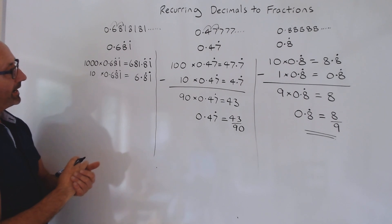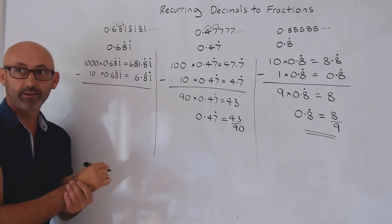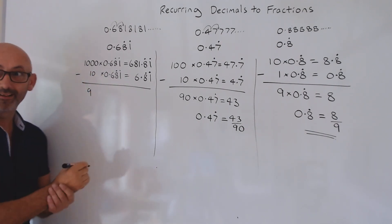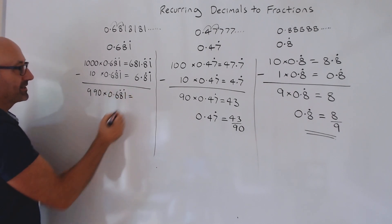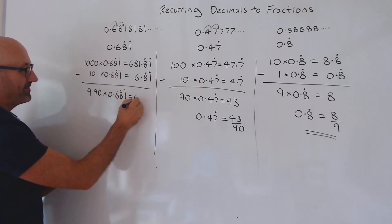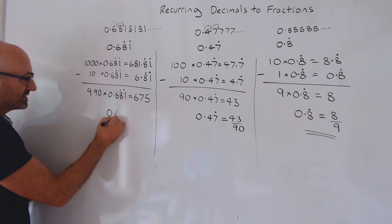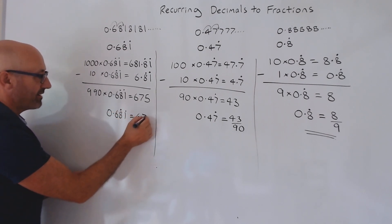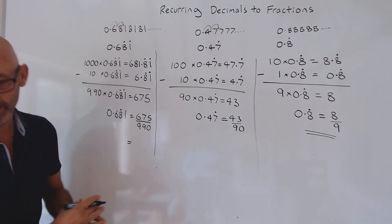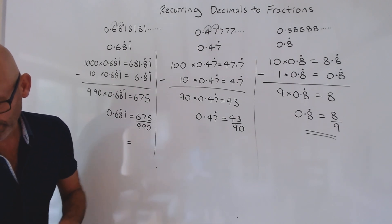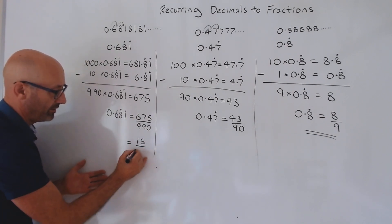Take it away. 1,000 take 10 — 990. Spot on. And that equals 6.75, isn't it? Check, Nina. Yeah, that's right. So 0.681 recurring equals 6.75 over 990. Will that simplify? Yes, it will definitely simplify — you can keep dividing by 5, and you're going to end up with 15 over 22.